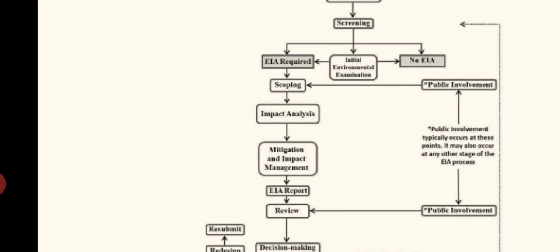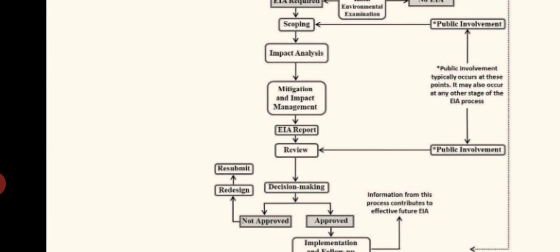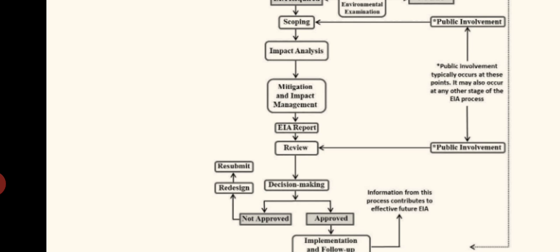Then comes impact analysis, prepared by experts, possibly with the help of consultancies. Once the impact analysis is done, we will have a clear idea about what the adverse effects on the environment will be. The next step is mitigation and impact management — we introduce various plans, or even change the designs, to reduce the effect on the environment. Once the impact analysis is done and solutions are found for the negative effects, we submit it as a report, which is the EIA report.